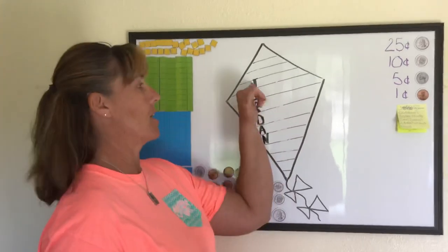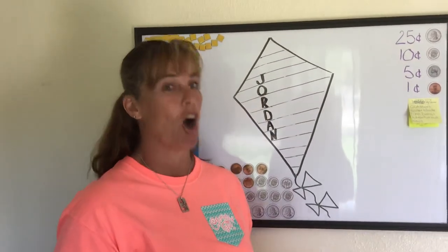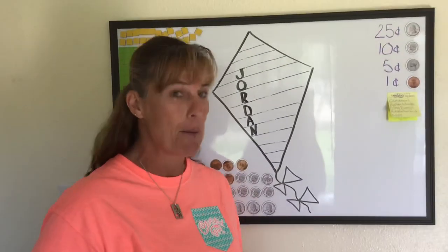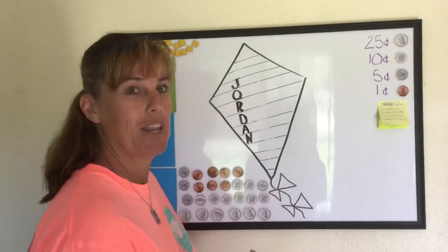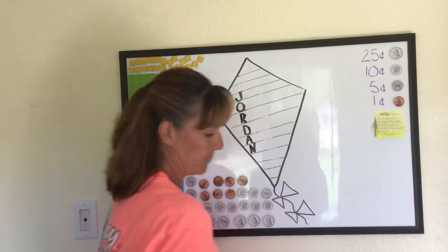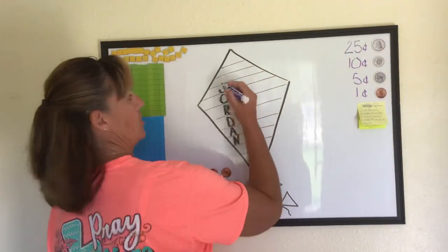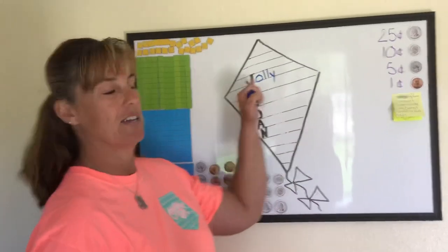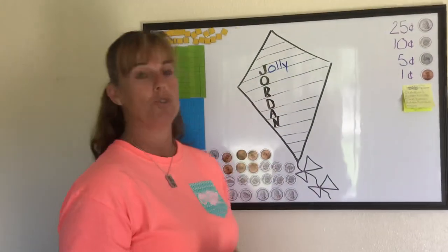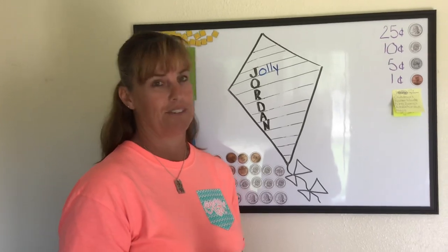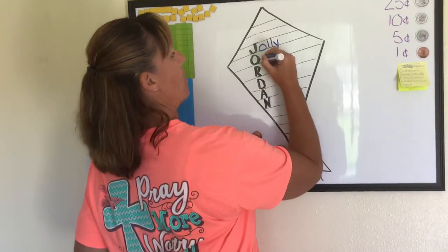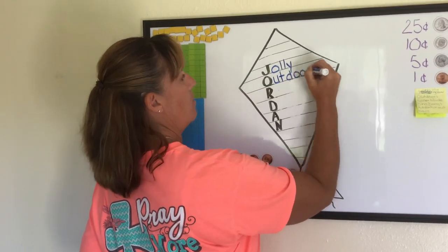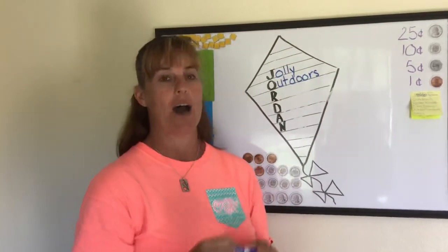A word that describes Jordan starting with the letter J might be 'jolly.' If you guys met Jordan, you would know she is a funny character — she's usually always happy and full of joy. So I'm going to put J-O-L-L-Y. Jordan is jolly. For the O, Jordan loves the outdoors, so I'm going to use the word 'outdoors' — O-U-T-D-O-O-R-S. Jordan loves the outdoors.